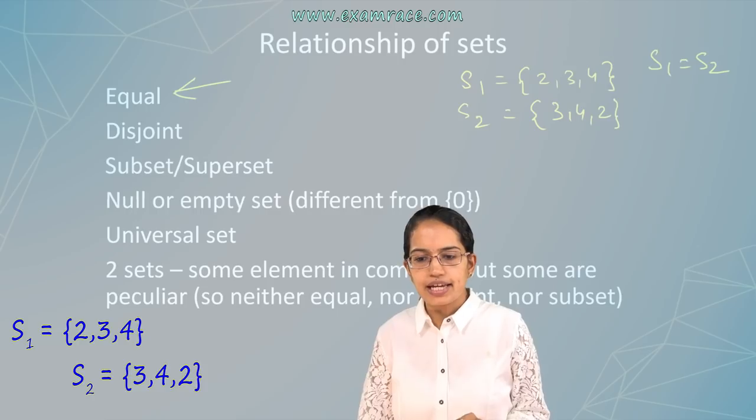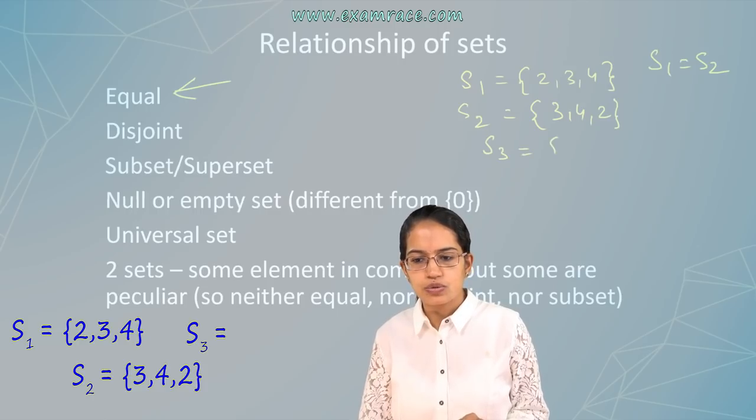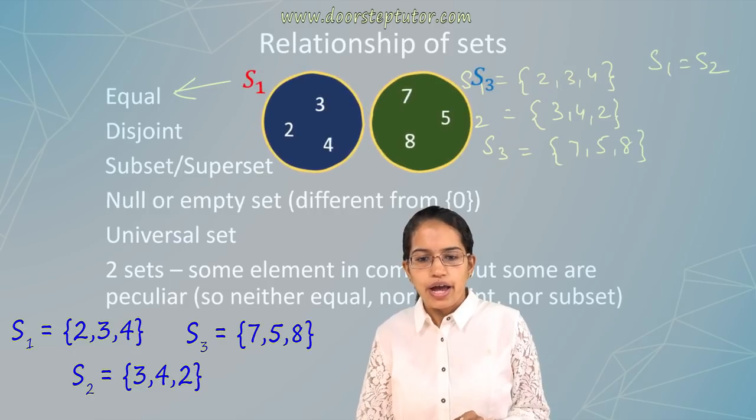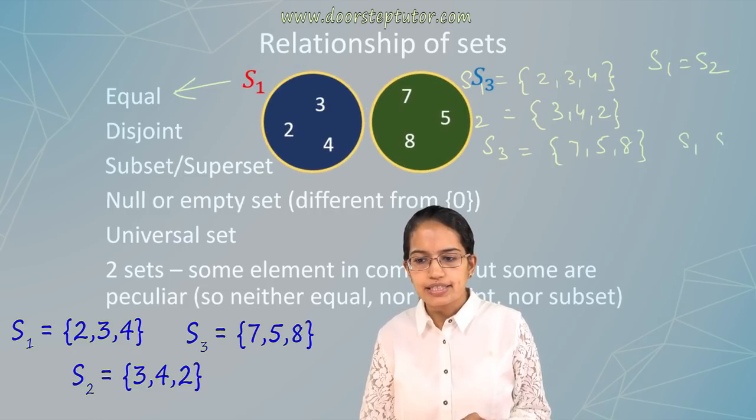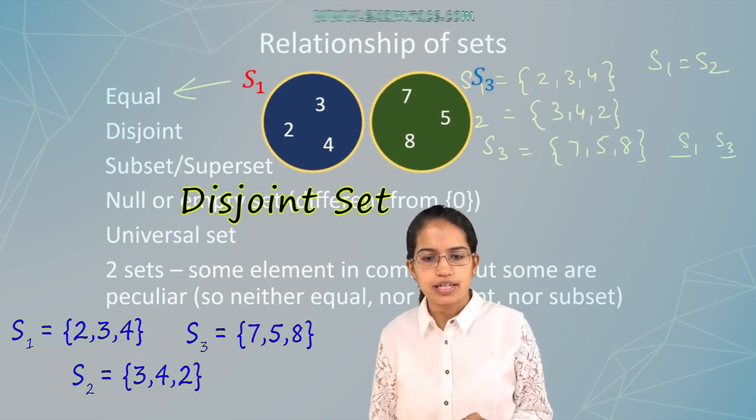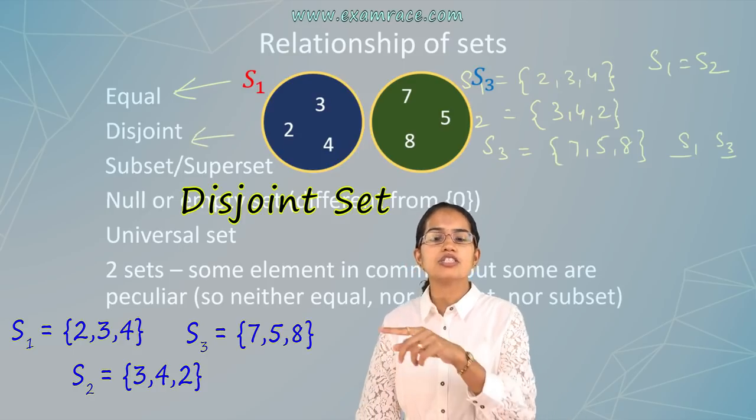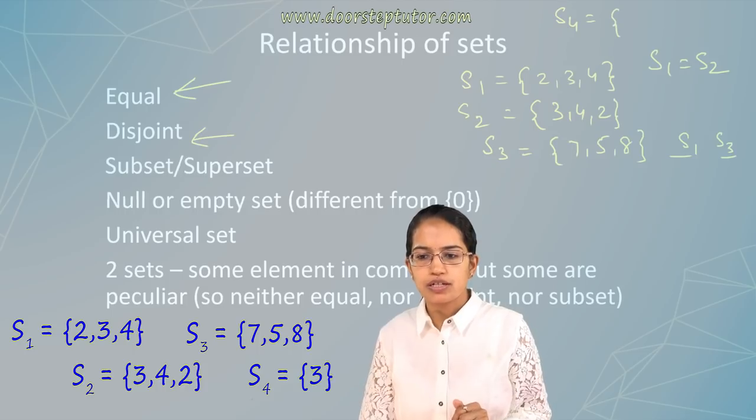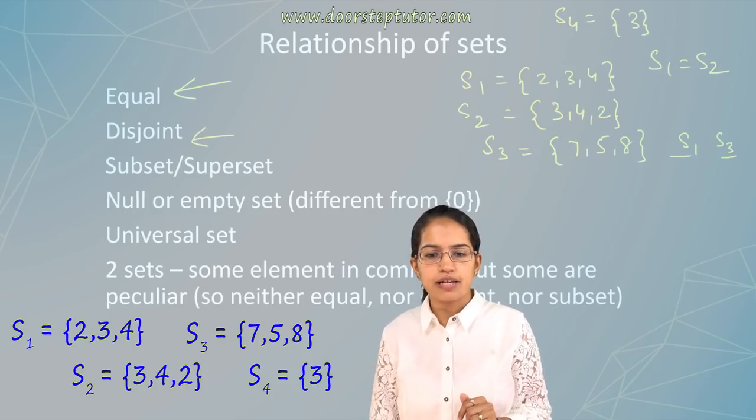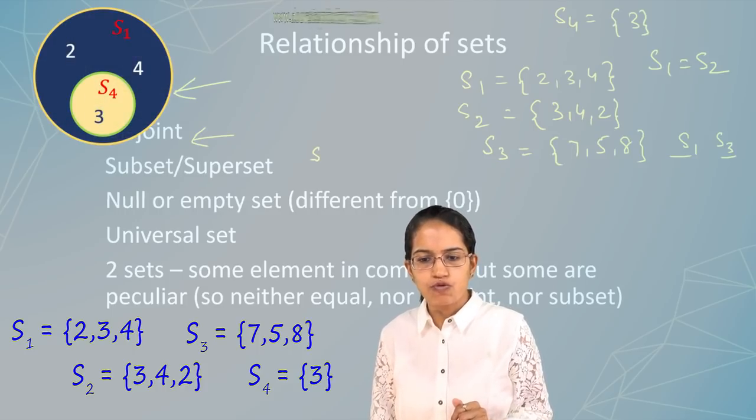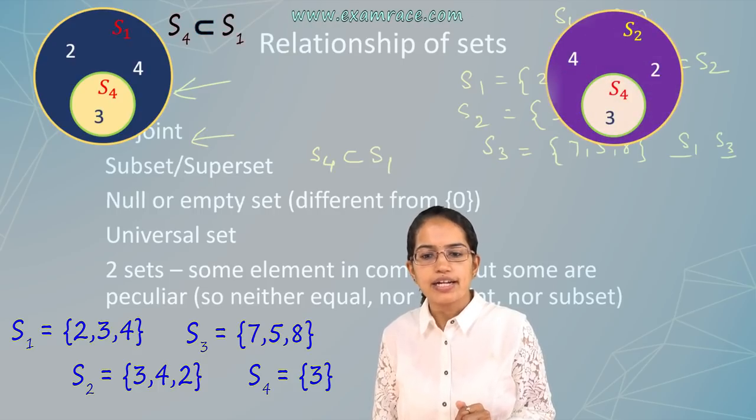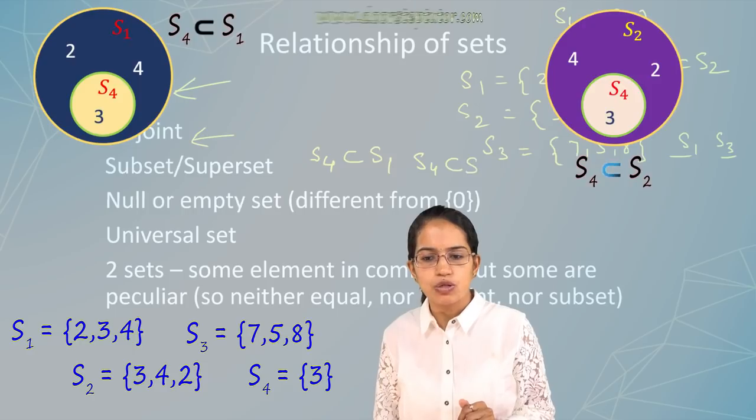The next thing is I take S3 is equal to 7, 5 and 8. Now S1 and S3 are disjoint. There is none of the numbers that is common between two.